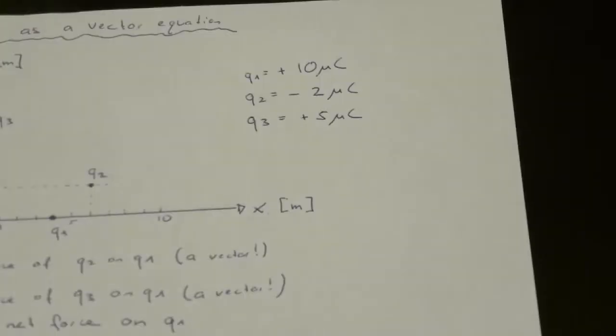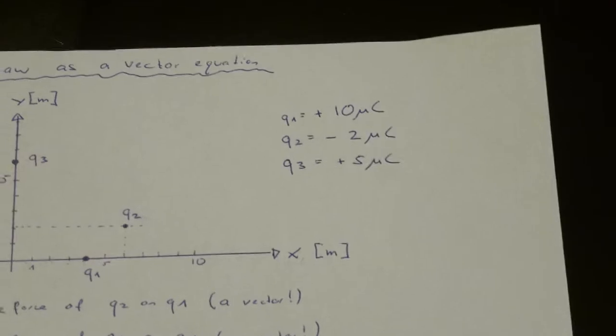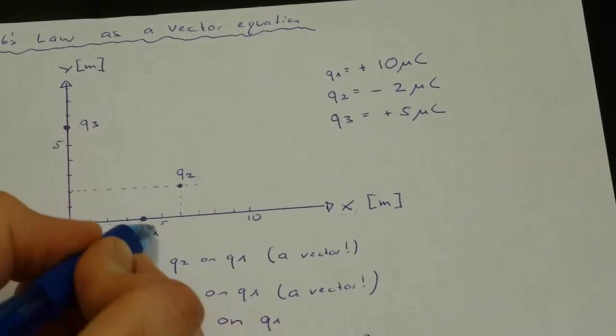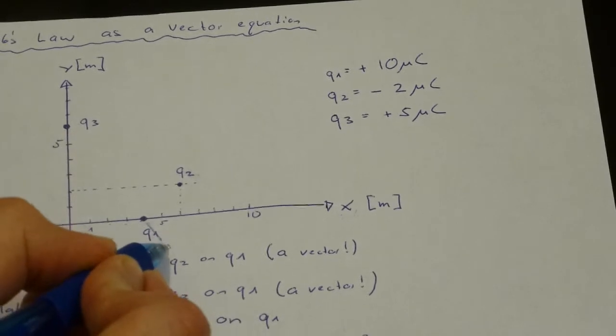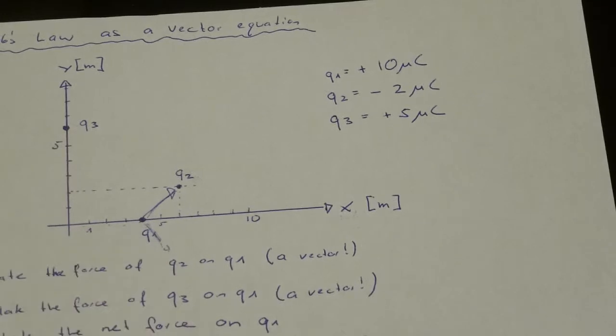Force of 3 on 1. 3 and 1 have the same signs so they will repel. So they will actually repel somewhere like down here. Here we had attraction, here we had repulsion.